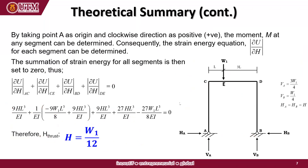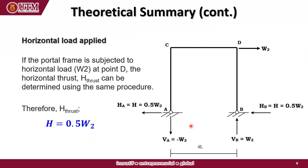Because the frame is symmetric, the horizontal thrust at support A and the horizontal thrust at support B are the same. If the portal frame is subjected to a horizontal load at point D, the horizontal thrust H can be determined using the same procedure. Therefore, we get the horizontal thrust H equal to 0.5 times W2.